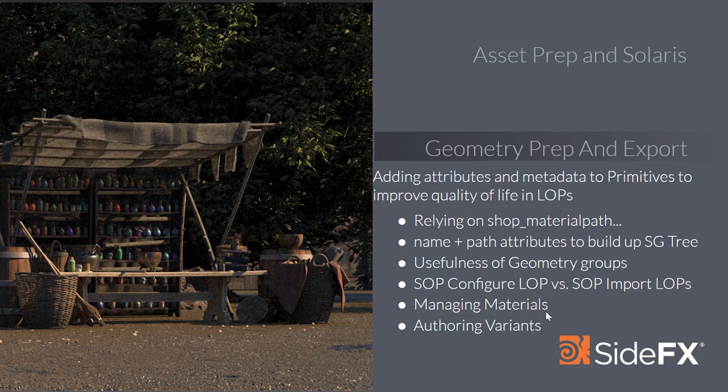On to geometry prep and export: we can add attributes and metadata to primitives to improve our quality of life in LOPs. You can use defaults, but by understanding just one level underneath them, we can create primitives inside LOPs that support assets throughout the lifetime of a project. The first import of an asset into Solaris really should be a good one.